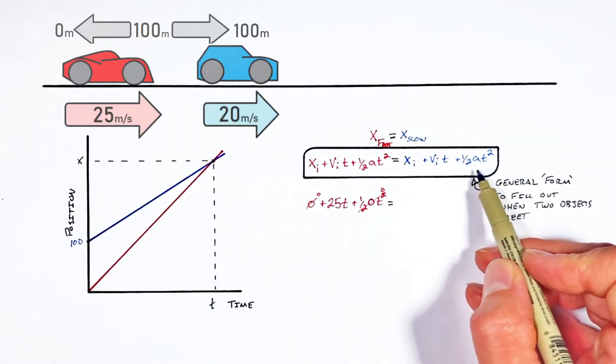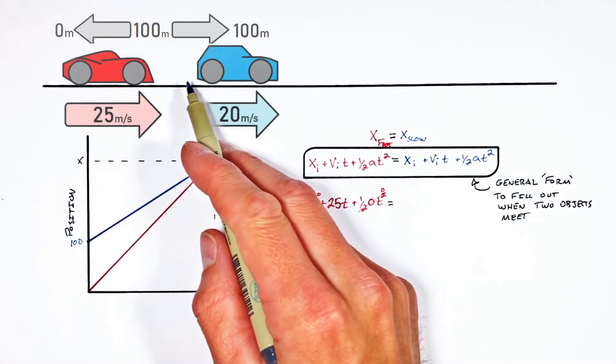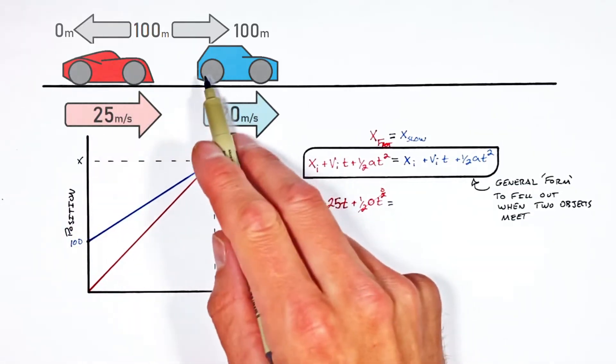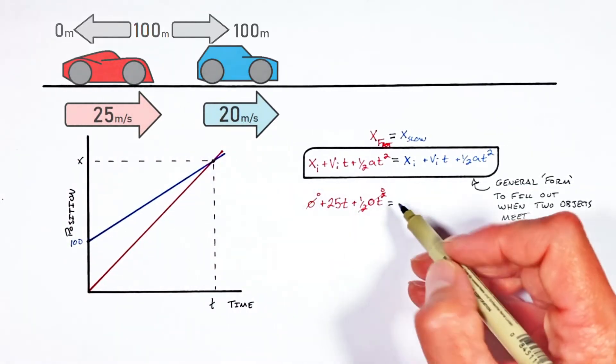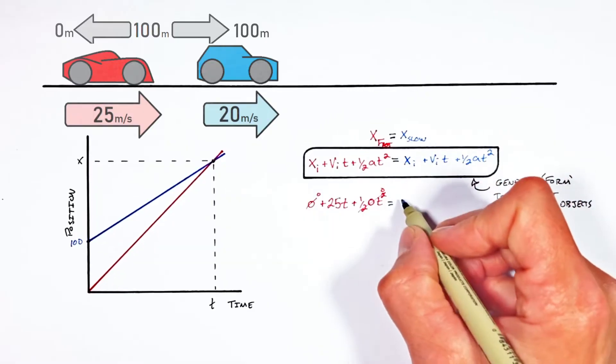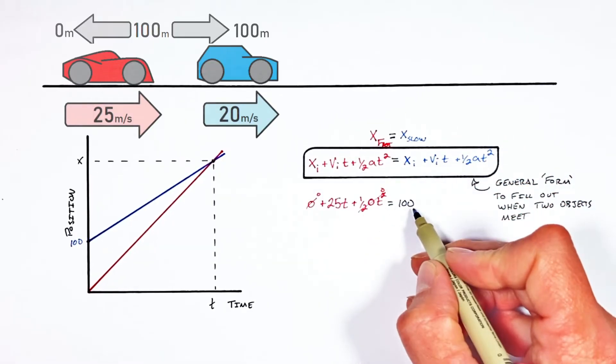And looking on the other side of the equality, the initial position of this slow car is not zero like our fast car. This slow car starts 100 meters ahead of the fast car. So our initial position is going to be 100.